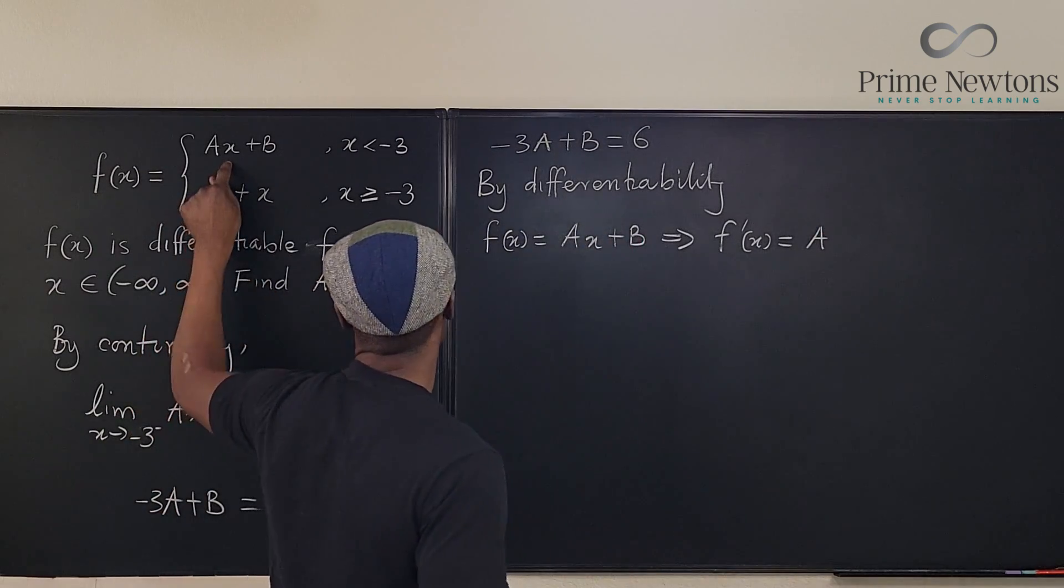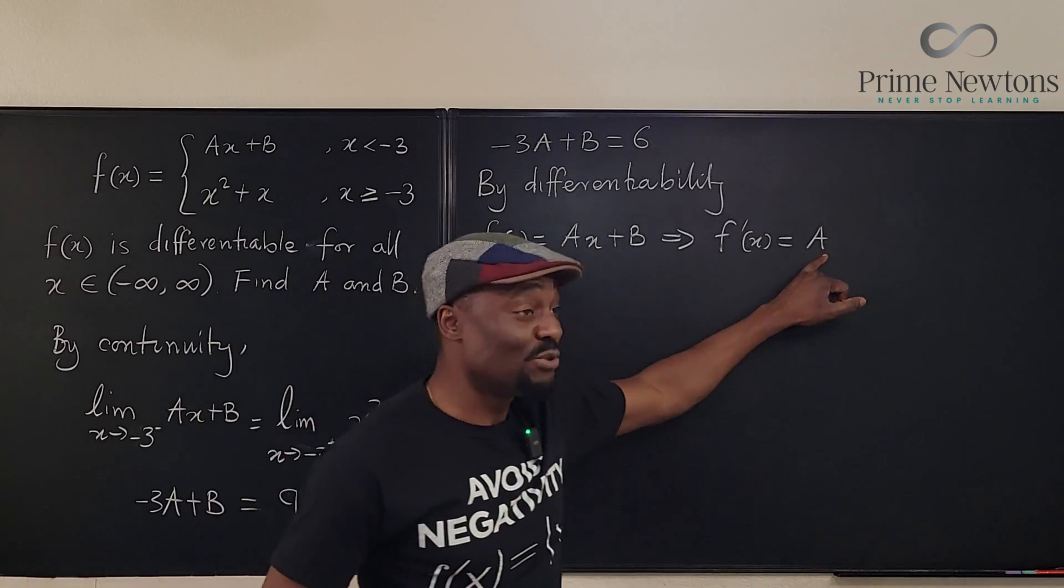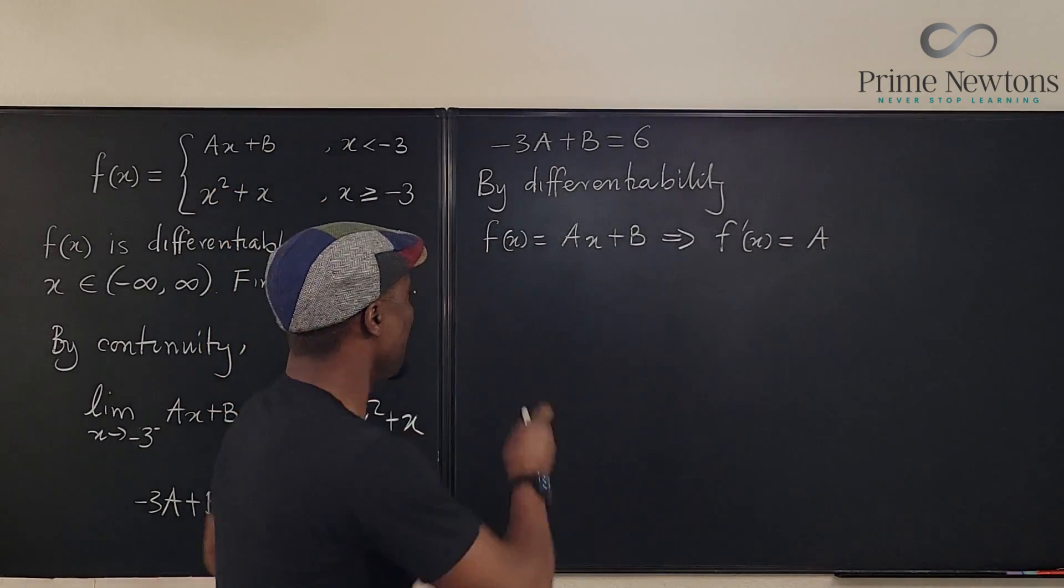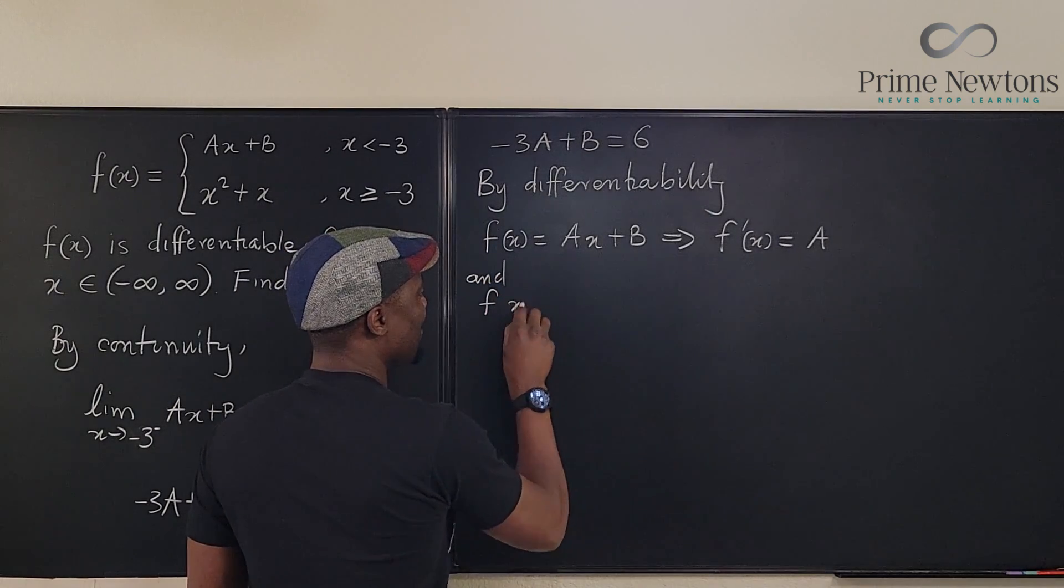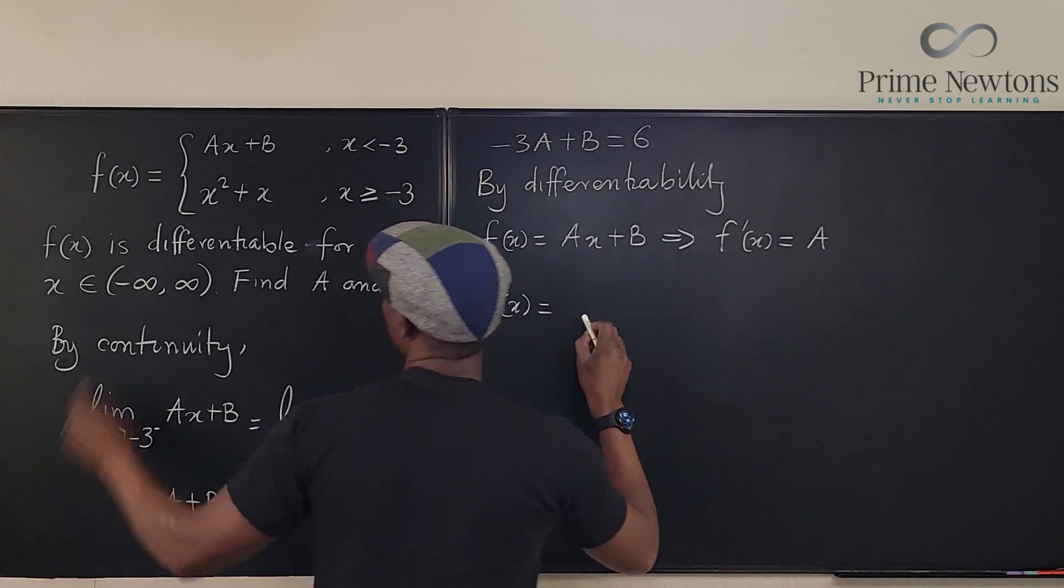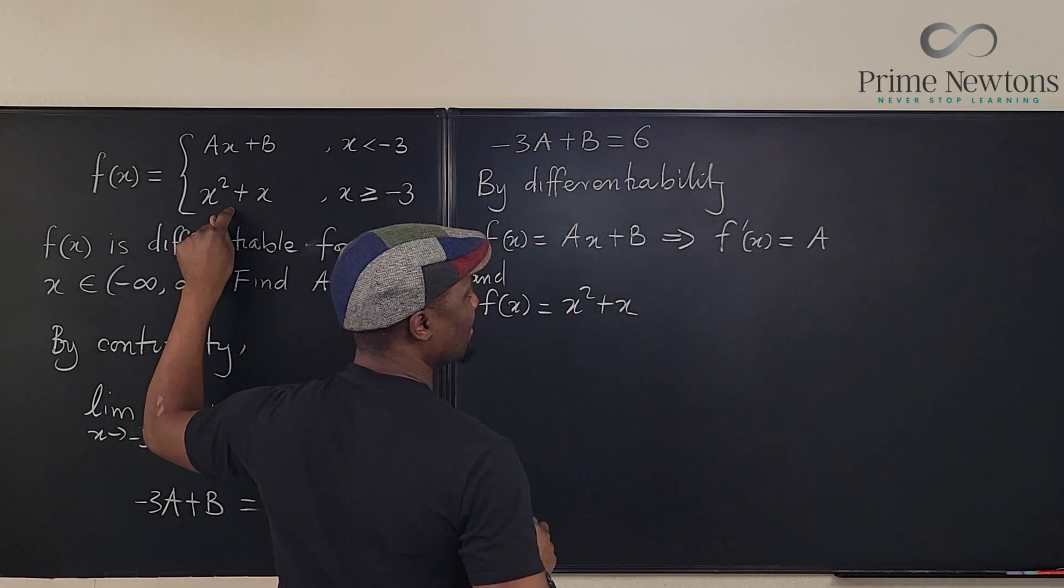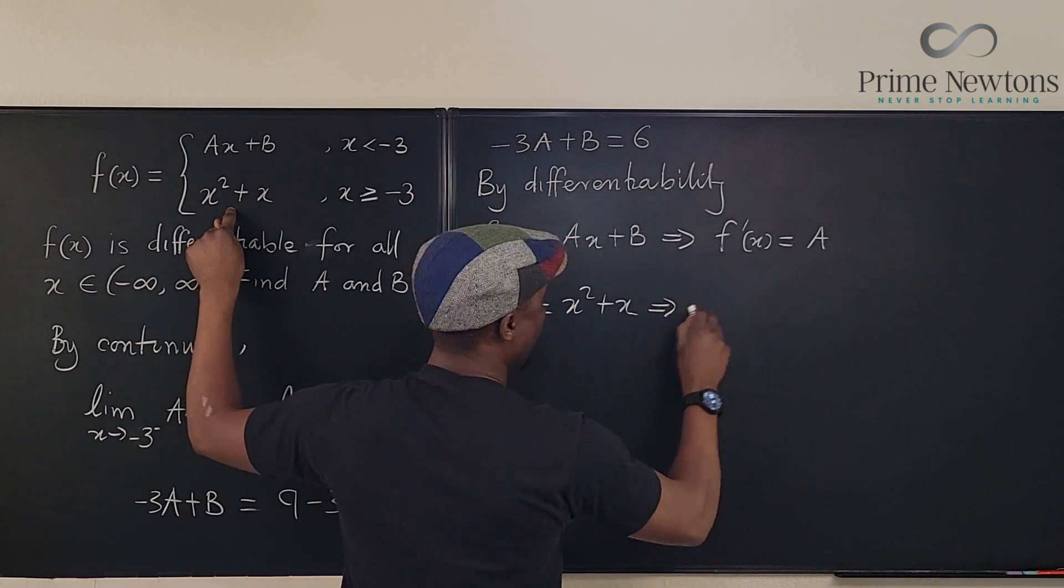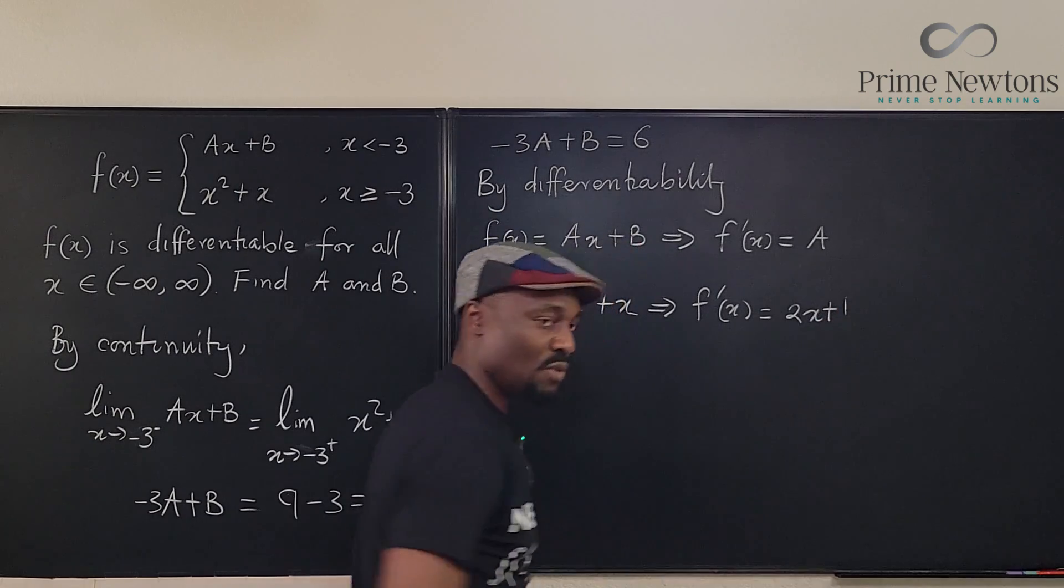That's it. If you differentiate this, you're just going to get a. And we're saying that the derivative you obtained using this function is the same derivative you're going to obtain if you say, and we know that f of x is equal to x squared plus x, right? And we have f prime of x will be equal to 2x plus 1.